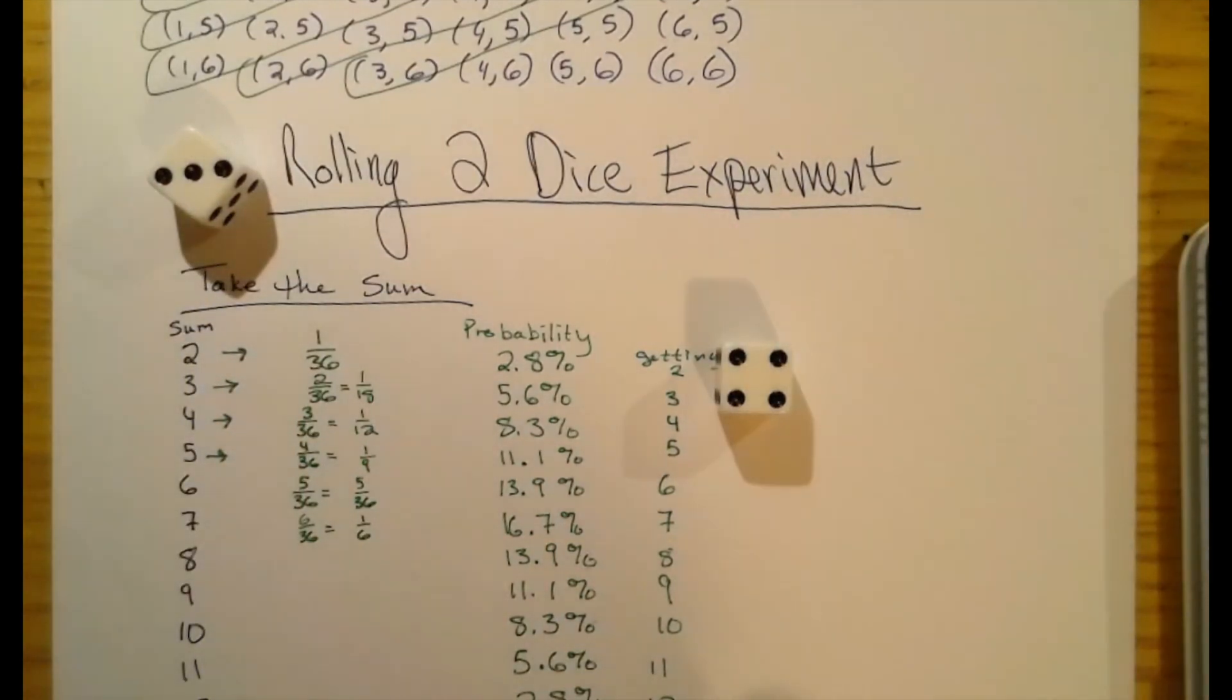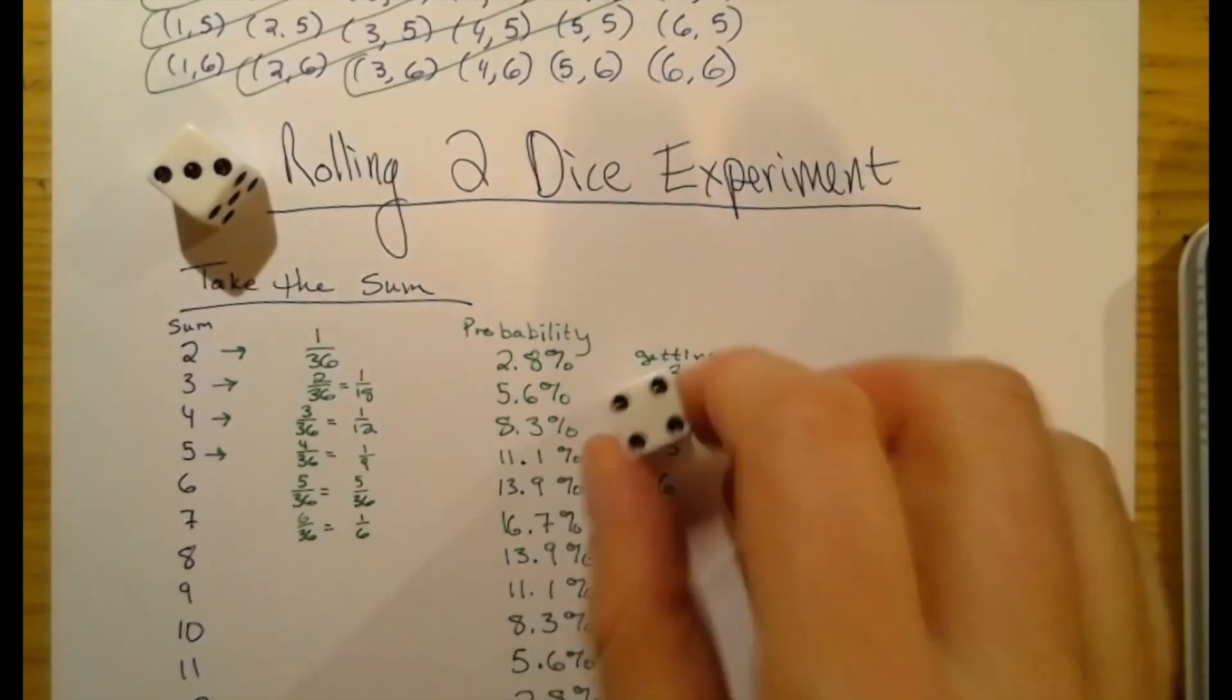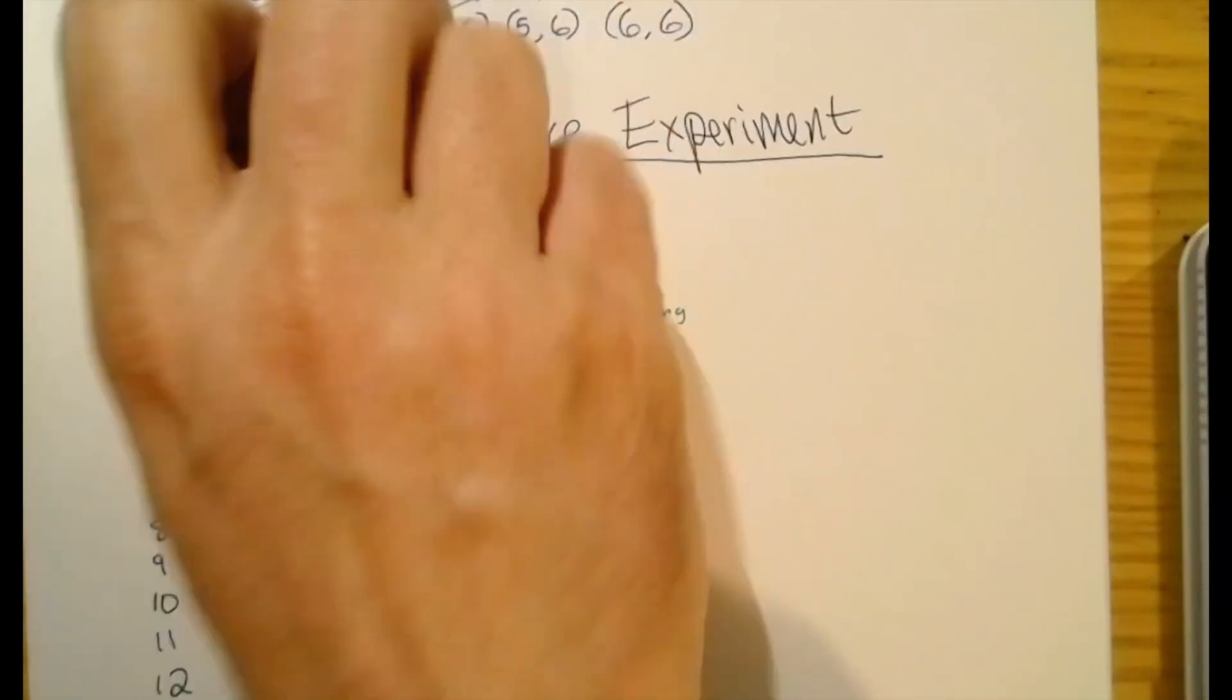I couldn't have planned that any better. It says I should probably get a 7. And what did I just roll? A 7, literally. So what we're going to do is actually roll some dice and collect the data.